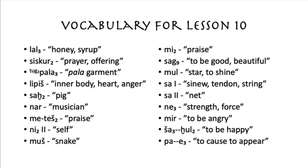Sa, meaning 1 — sinew, tendon, string of an instrument. Sa, meaning 2 — a net. Ne3 — strength or force. Mir — to be angry. Sha3 khul2 — to be happy. And finally, pa a3 — to cause to appear.